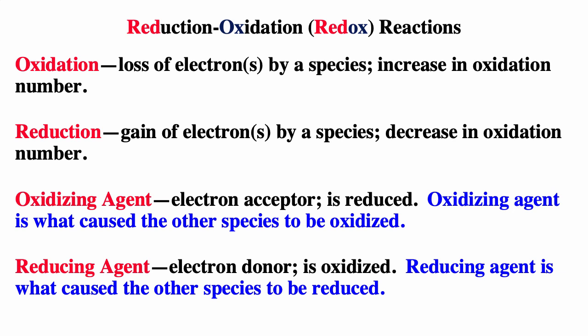Reduction is the gain of electrons, and so a decrease in oxidation number. The oxidizing agent is what causes the oxidation, so the oxidizing agent is reduced. The reducing agent is what causes the reduction, so the reducing agent is always oxidized. For an electrochemical reaction, you always have something being oxidized — the reducing agent — and something being reduced — the oxidizing agent.